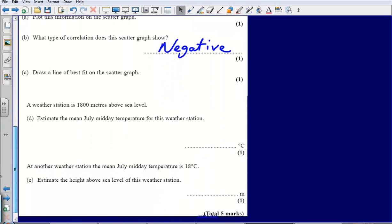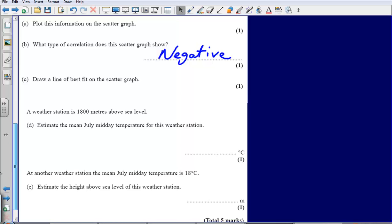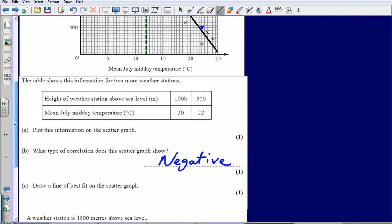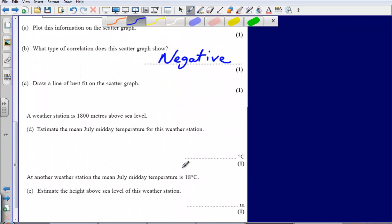Then a weather station is 1,800 meters above sea level. Estimate the mean July midday temperature for this weather station. Now we need to use our line of best fit to do some estimations. First of all, it's asking us for 1,800 meters above sea level, so we need to find out where that is first. Be careful when you're reading the scale. That there is going to give me 1,900 meters above sea level, and go down 2. That's going to give me 1,800 meters. If I go along to that point and then go down, that's going to give me a temperature of 12 degrees.